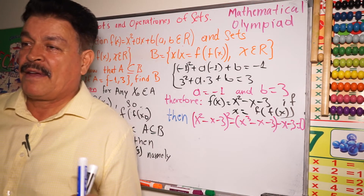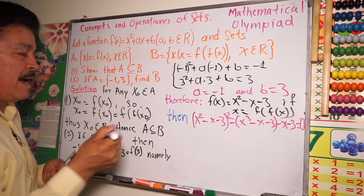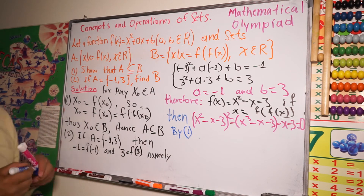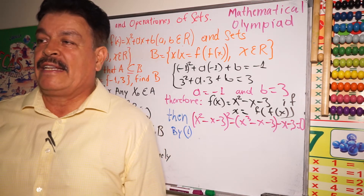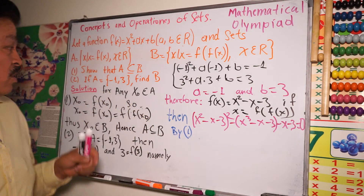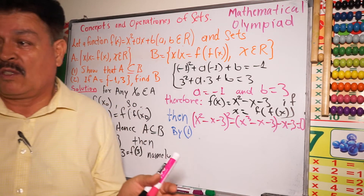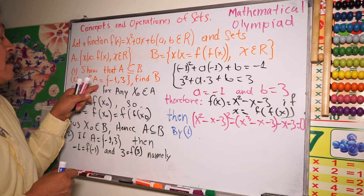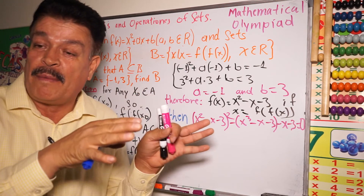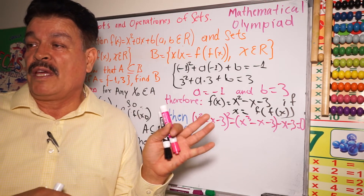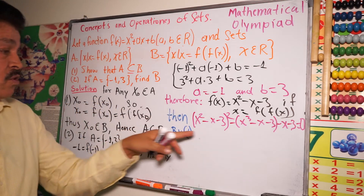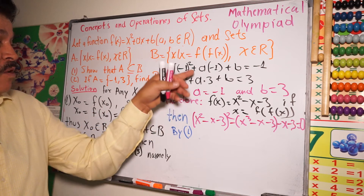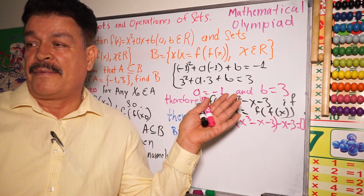By step one, we know that negative 1 and 3 belong to B, since A is a complement of B. Therefore negative 1 and 3 are roots of the above equation.